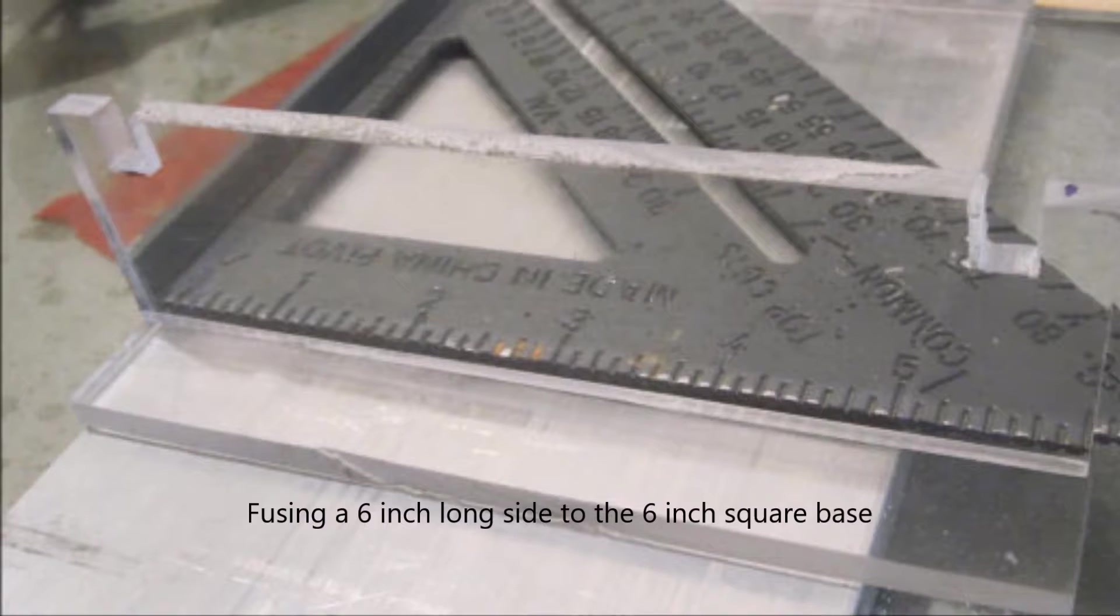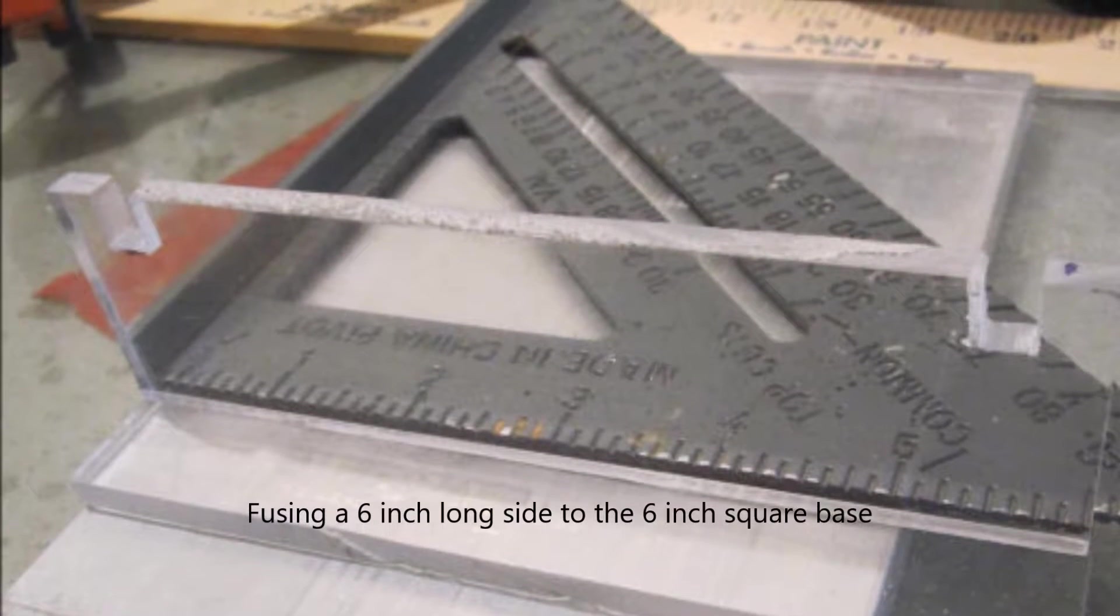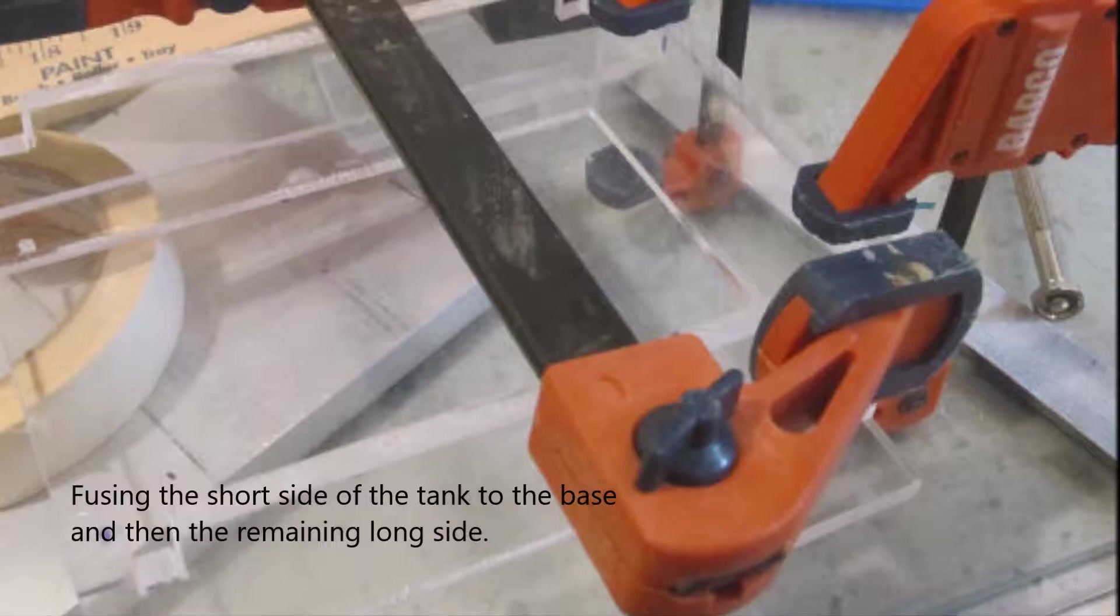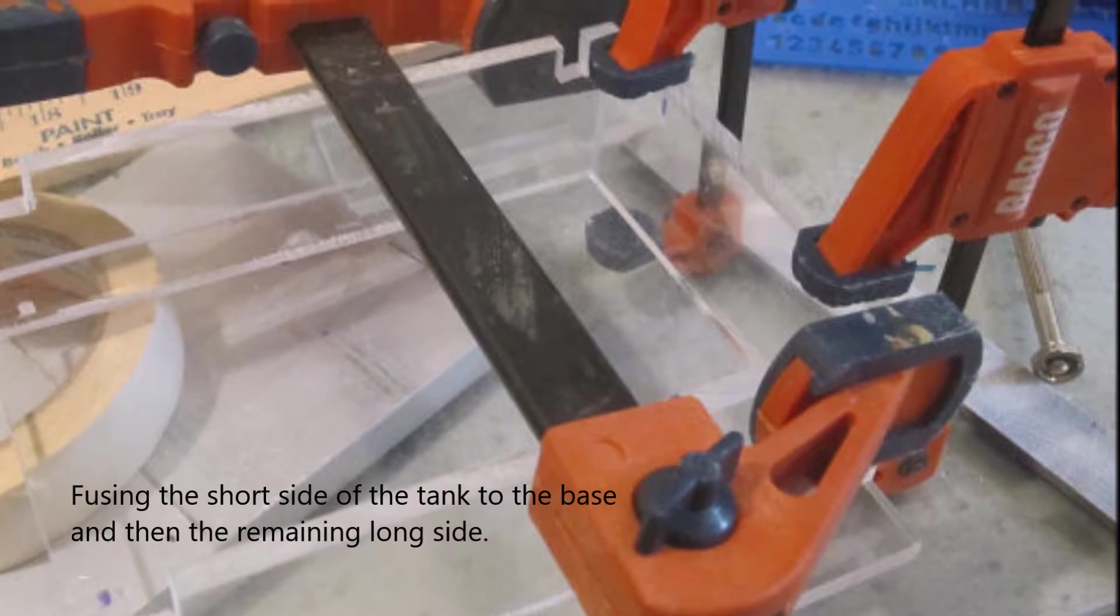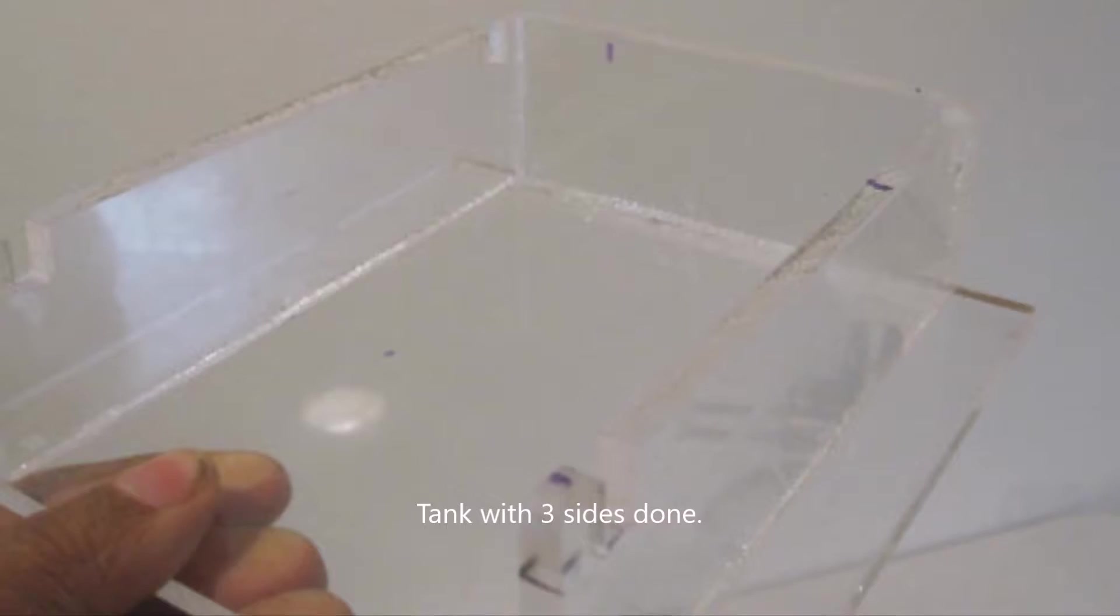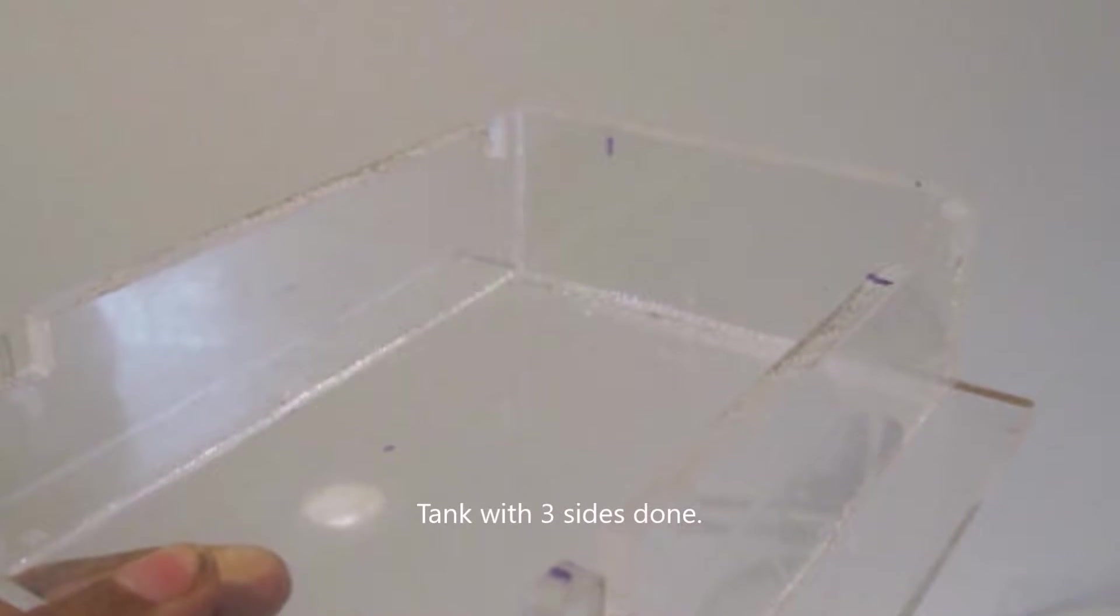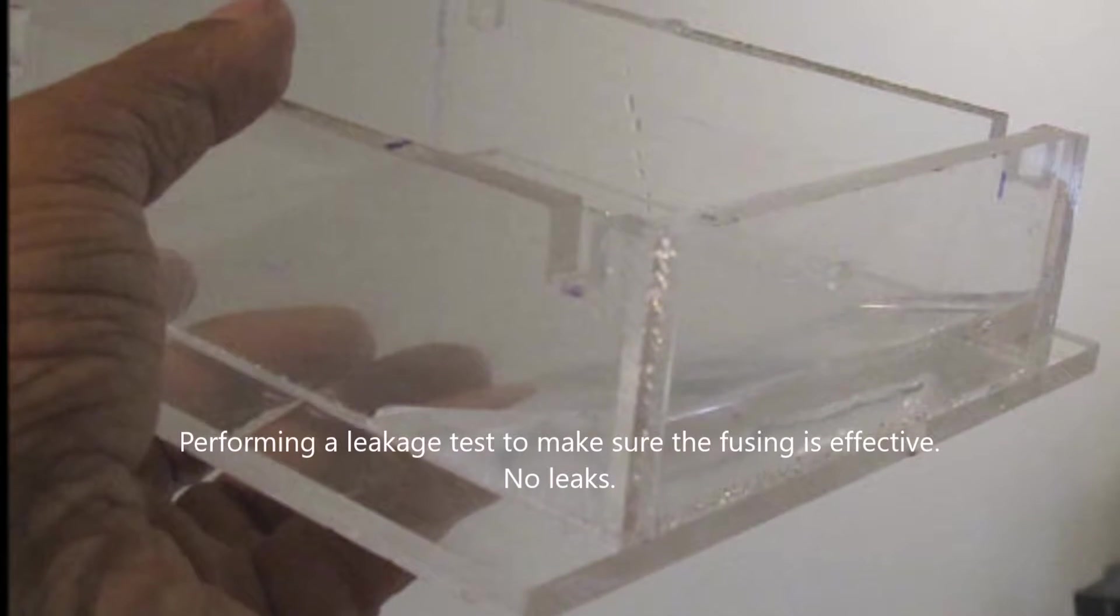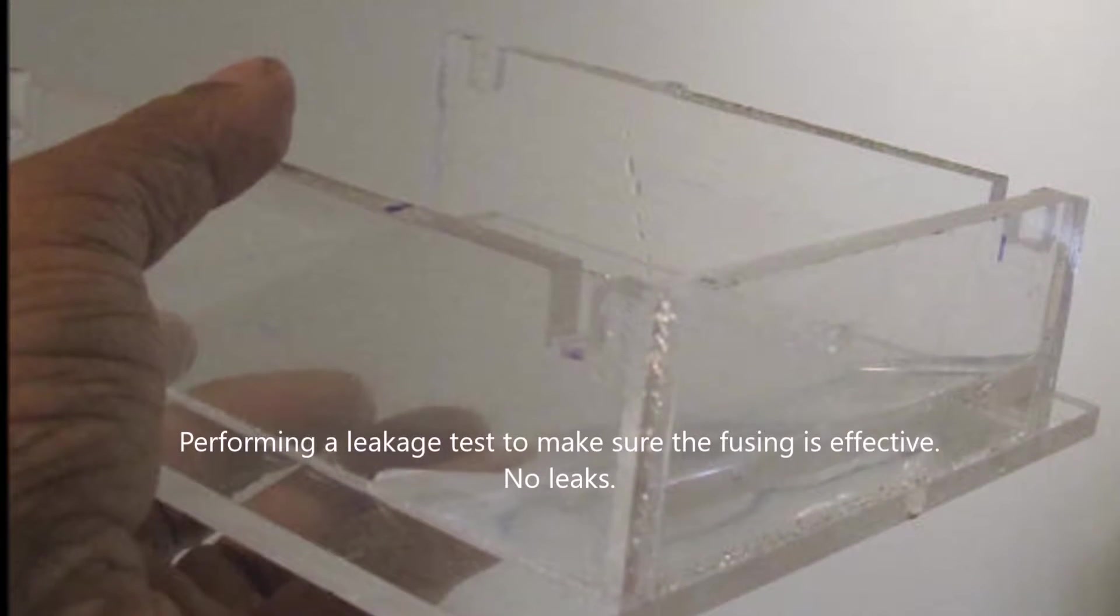So the next step is making the electrophoresis tank that holds everything together. This was made from vertical acrylic pieces that rest on that horizontal 6-inch square. So two sides were glued together, and one cross side was put that would hold the two sides together. So this is the tank with three sides, and you never know whether you have a leak or not, right? So I filled it with water to make sure nothing leaked - seemed okay.